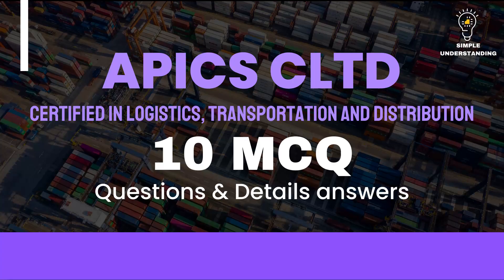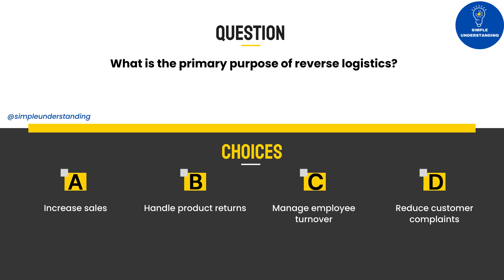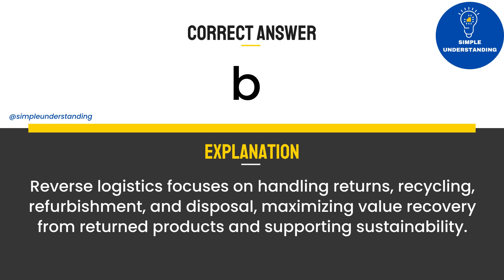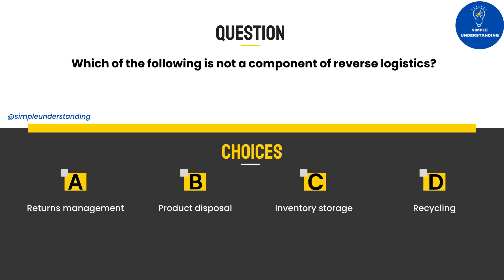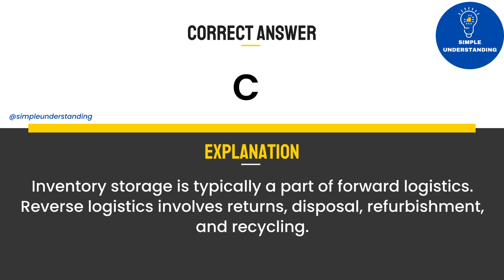Section B Practice Test. Question 1: What is the primary purpose of reverse logistics? A. Increase sales. B. Handle product returns. C. Manage employee turnover. D. Reduce customer complaints. Answer: B. Reverse logistics focuses on handling returns, recycling, refurbishment, and disposal, maximizing value recovery from returned products and supporting sustainability. Question 2: Which of the following is not a component of reverse logistics? A. Returns management. B. Product disposal. C. Inventory storage. D. Recycling. Answer: C. Inventory storage is typically a part of forward logistics; reverse logistics involves returns, disposal, refurbishment, and recycling.